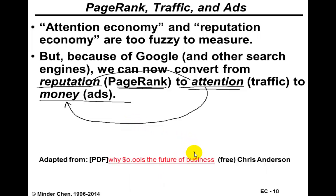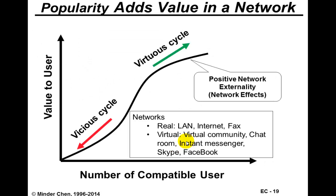This is actually adapted from Chris Anderson's book called 'Why Free: Zero Is the Future of Business.' Now let's look at the network effect, sometimes called network externality, which is a more academic term.